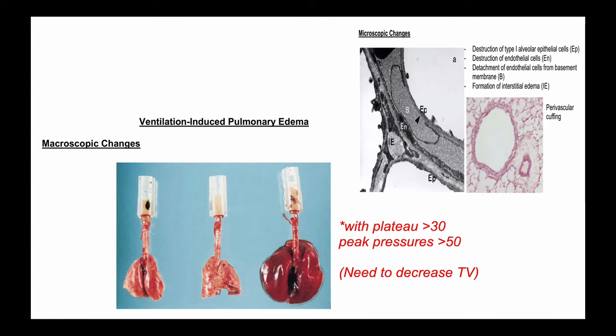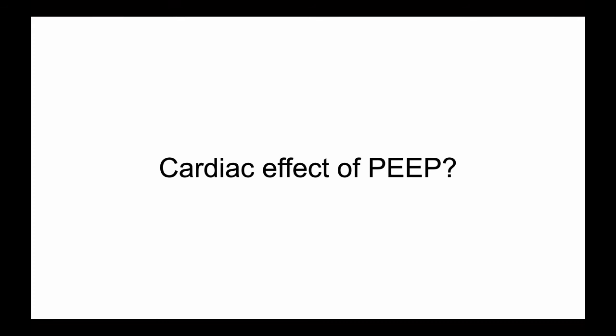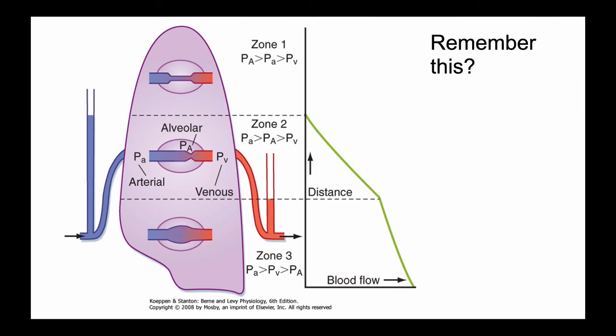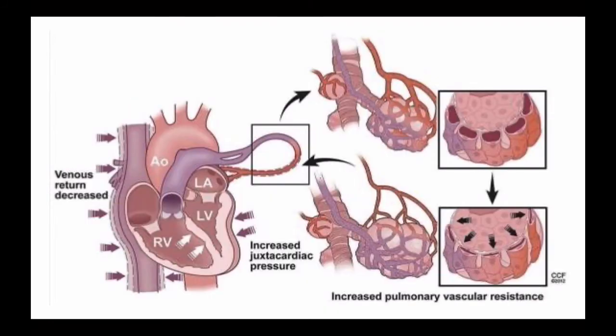So we have permissive hypercapnia and a permissive lower FiO2 target. There are also the cardiac effects of PEEP as it compresses the airway — it compresses the arteriovenous sides, leads to a preload problem, increased pulmonary vascular resistance, and reduced venous return.